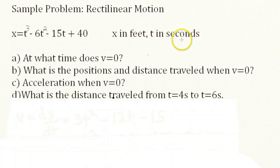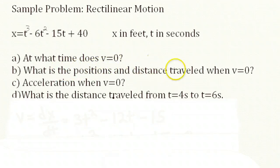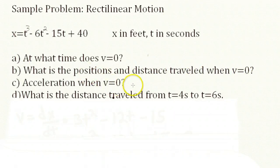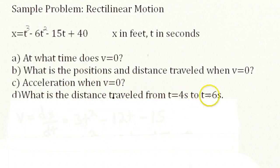We've got four different questions here. What time does the velocity equal zero? What are the position and distance traveled when v equals zero? What is the acceleration when v equals zero? And what is the distance traveled from t equals 4 seconds to t equals 6 seconds?